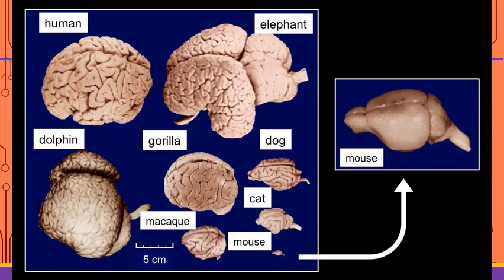Brains are roughly the same design the world over, depending on what animal you're talking about. They may have different levels of complexity underneath this similar design. Look at this mouse, for example — very smooth surface, very bland. There's not a whole lot there. Kind of suits the mouse's lifestyle.